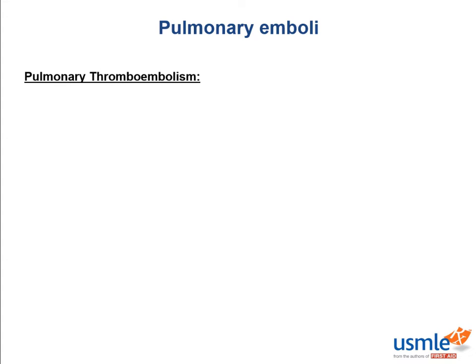Now on to the most important type. When you hear someone say pulmonary embolism, or PE, they're almost always talking about thromboembolism — it's the default. The vast majority of pulmonary emboli arise from deep vein thrombosis in the lower extremities.